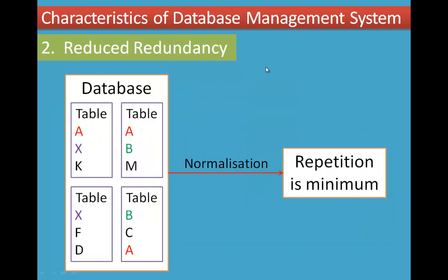Reduced redundancy: redundancy means repetition. For example, if we look at a table with entries A-A-A, X-X, B-B — the same content appears repeated across the table. If we do normalization, we can minimize these repetitions and minimize the same content.